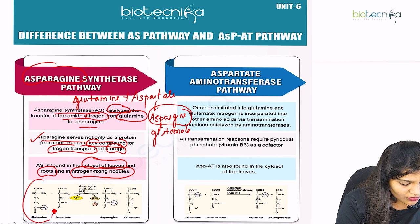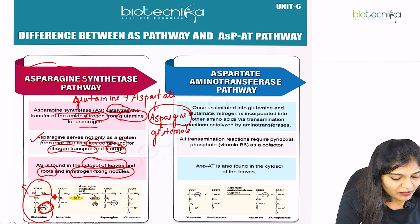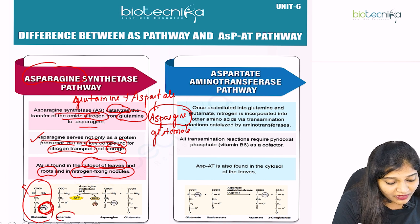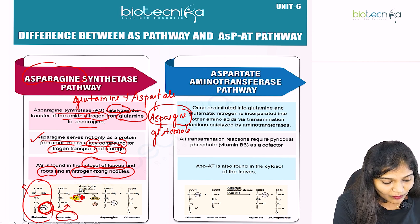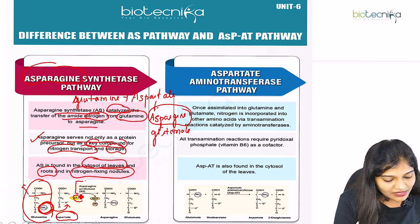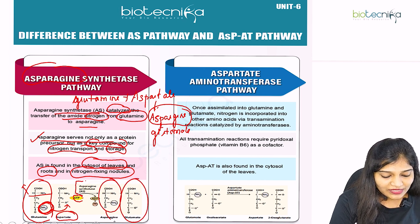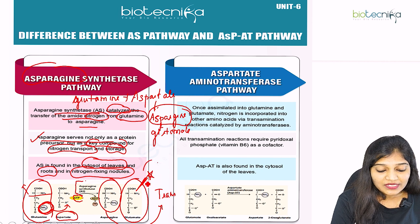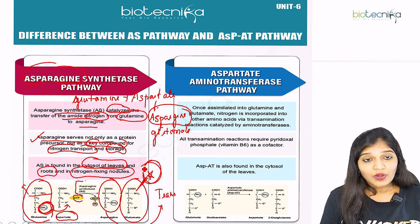Looking at the diagram: here you see glutamine, a basic amino acid with an amine group on the fifth carbon. Next you see aspartate, which is an acidic amino acid. The amine group is transferred from glutamine to aspartate by utilizing ATP, via asparagine synthetase, and you get asparagine plus glutamate. This asparagine is transported and stored. The question now is: what happens to this glutamate molecule? That leads us to the next step.